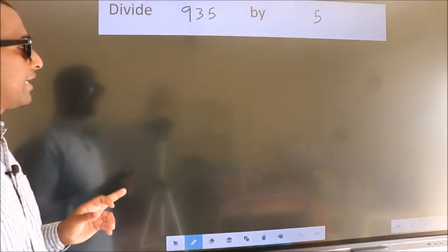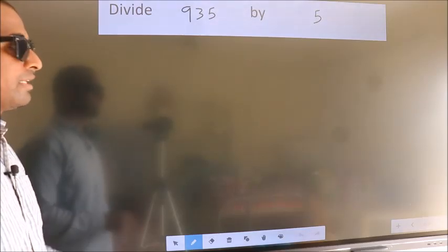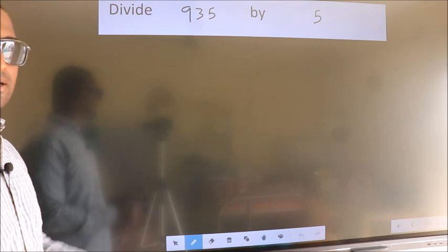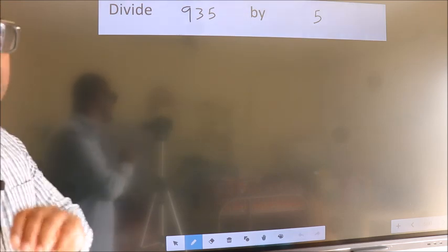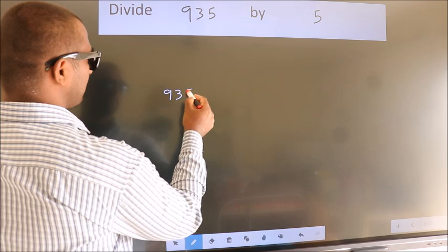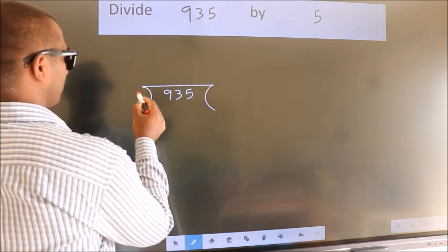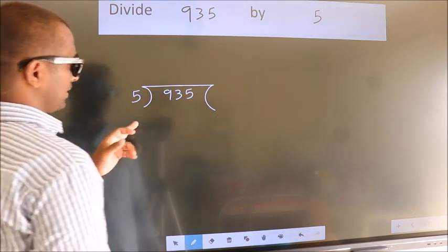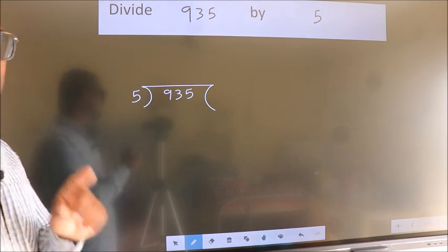Divide 9.35 by 5. To do this division, we should frame it in this way. 9.35 here, 5 here. This is your step 1.